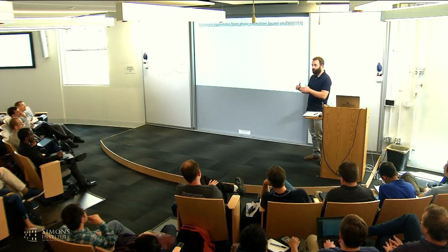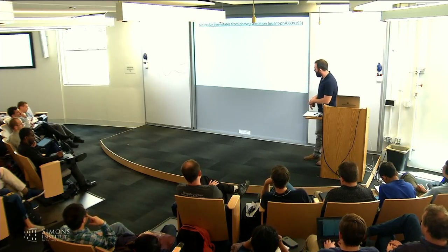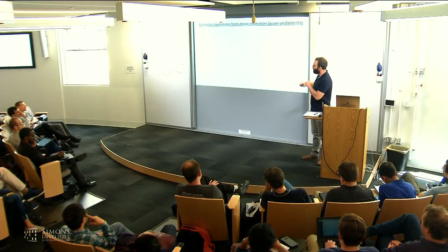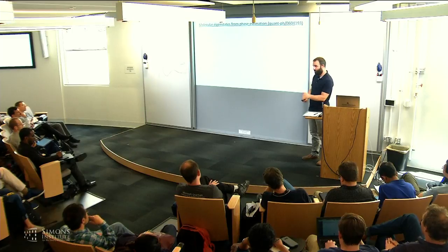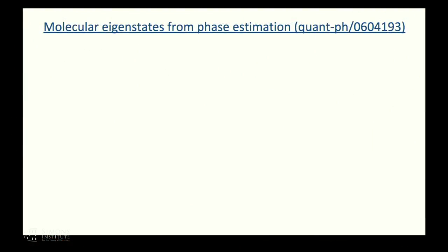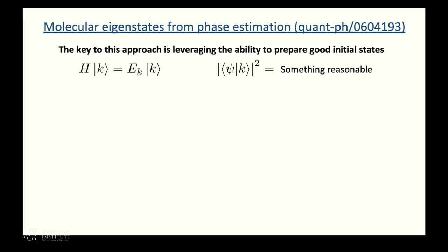The rest of this talk is going to be about algorithms for both fault-tolerant devices and ones applicable for the near term. First, I'll talk about what I would call the canonical quantum algorithm for chemistry. The key to this approach is to leverage the fact that classical methods, say mean field methods or other methods Martin talked about, allow us to prepare initial states that have some reasonable overlap on the ground states of interest. For instance, if we're interested in preparing and measuring the energy of eigenstate K, we should be able to start the simulation in some state psi that has some reasonable overlap on the ground state.